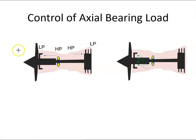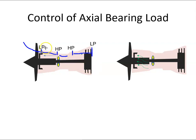As air comes through the engine, it comes through the fan and goes through the low pressure compressor, then through the high pressure compressor, so as it goes through, the pressure is increasing and we get a high pressure area just around here in the engine. We have a low pressure area here, it goes through the combustion can, and then we're going into the turbine section, so it's high pressure here and it goes back to low pressure.